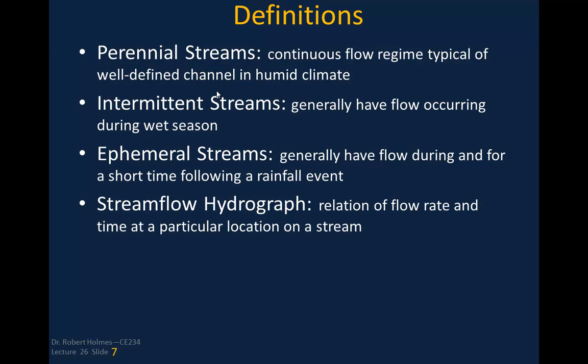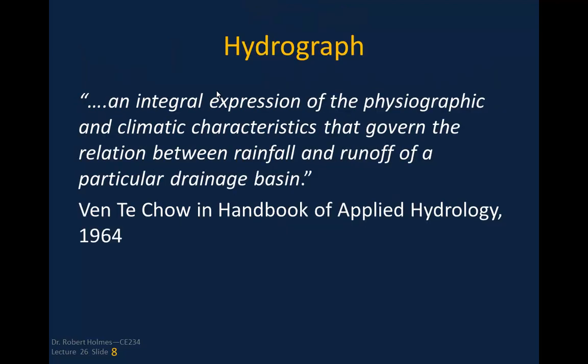A streamflow hydrograph is a relation of flow rate and time at a particular location on a stream. I like this definition from Vin T. Chow's Handbook of Applied Hydrology in 1964: it's basically an integral expression of the physiographic and climatic characteristics that govern the relation between rainfall and runoff of a particular drainage basin.